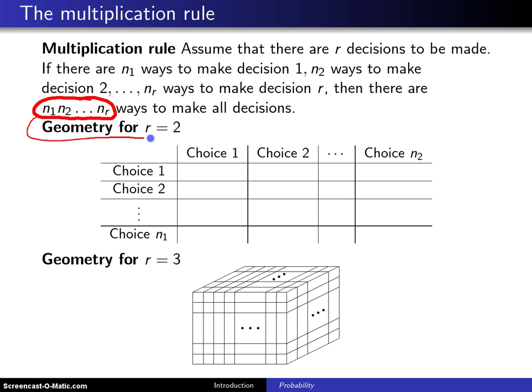So we start with the geometry associated with r equals 2. And in this particular case, if we assume that the rows here denote decision 1, and the columns here represent decision 2,